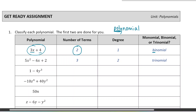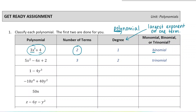The degree is the largest exponent on one term. So in this polynomial, the x actually has an exponent of one. We don't write an exponent of one there, but there is technically a hidden one. So the degree of this polynomial would be one.